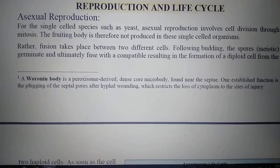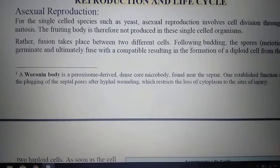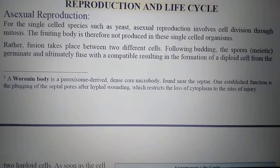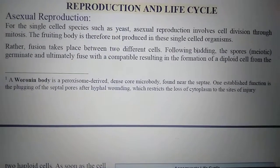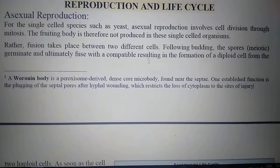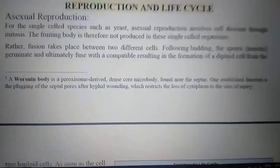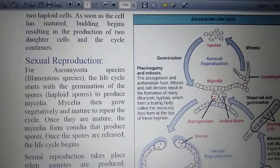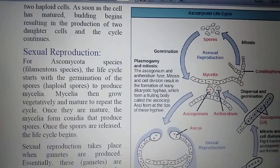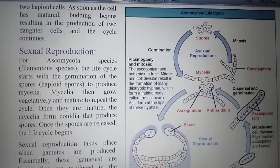In reproduction and life cycle, asexual reproduction in single-celled forms which are yeasts is simply by mitosis. Budding is used in Ascomycota members. In asexual reproduction, budding produces spores. Spores are meiotic, germinate and fuse with another compatible spore resulting in the formation of a diploid cell. The diploid cell matures, budding again starts, and two daughter cells are produced which fuse with the opposite strain. This cycle then continues.